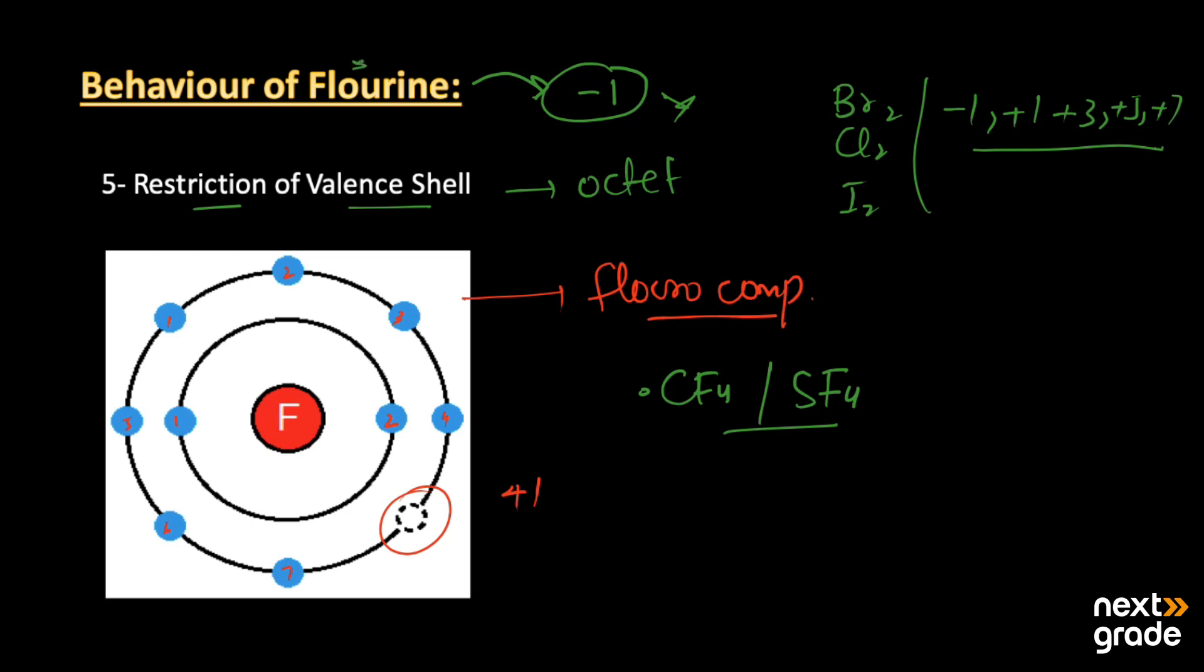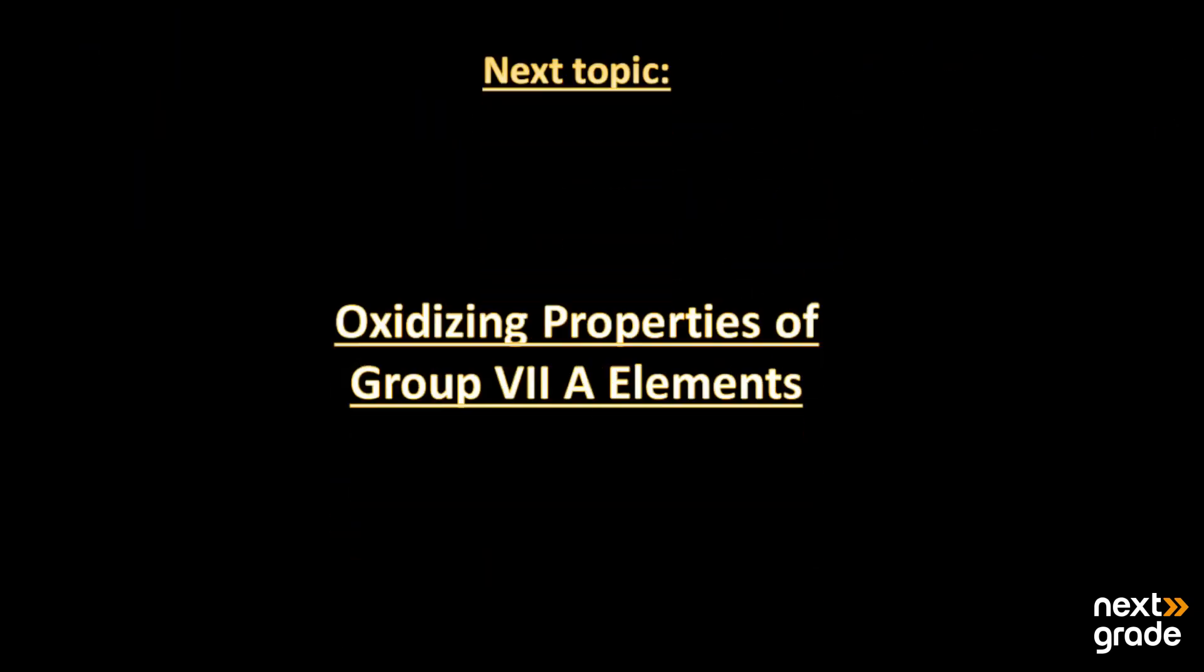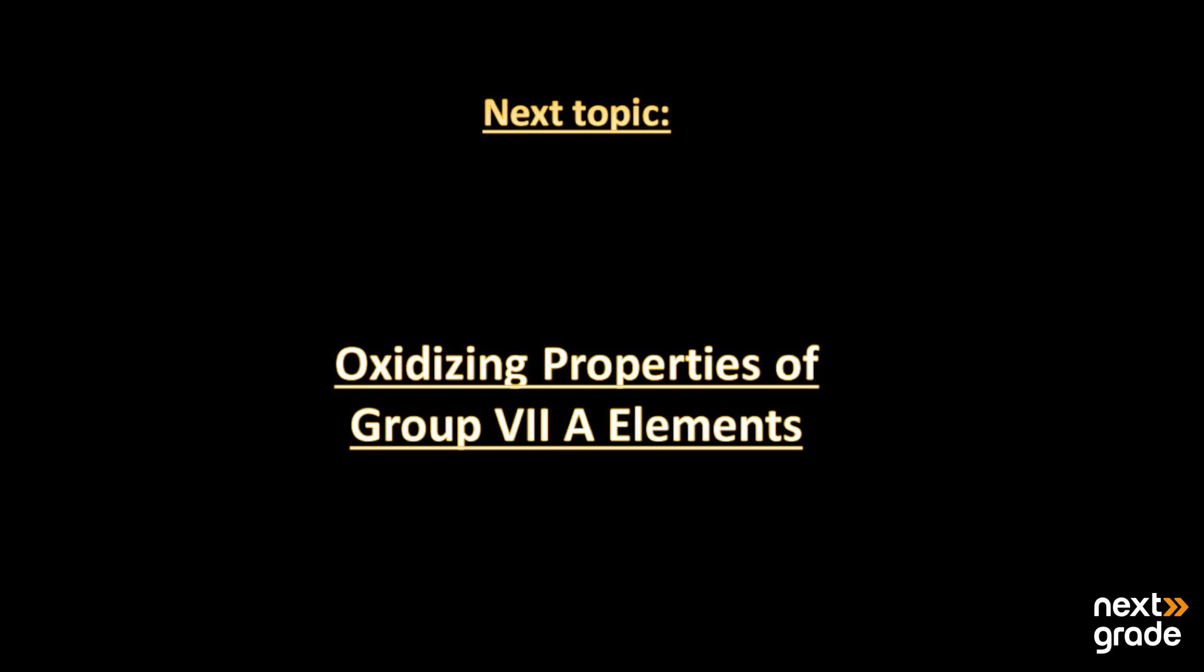Fluorine is the only element that can combine directly with noble gases like xenon, radon, and krypton. This was all about today's lecture. I hope you guys understand. If you have any queries, you may ask me in the comment section and I will get back to you soon. The next topic we will discuss is oxidizing properties of group 7A elements. For that time, you guys keep learning and have a good day.